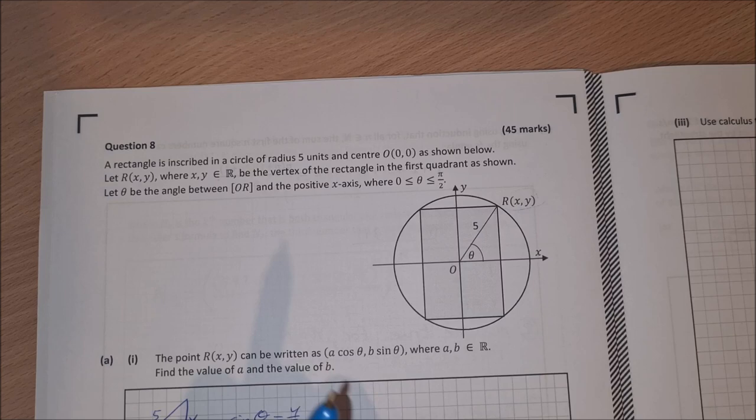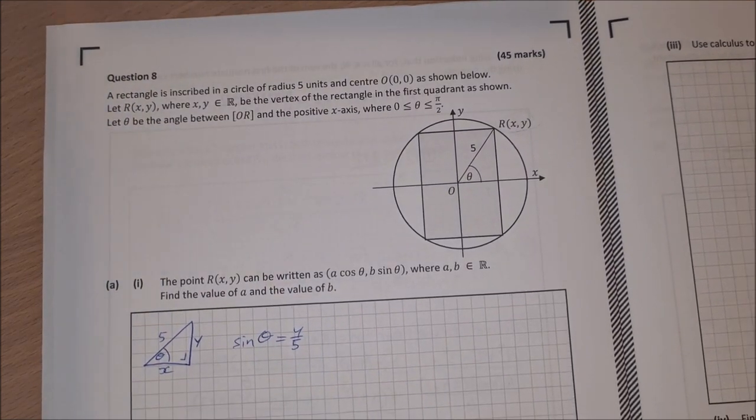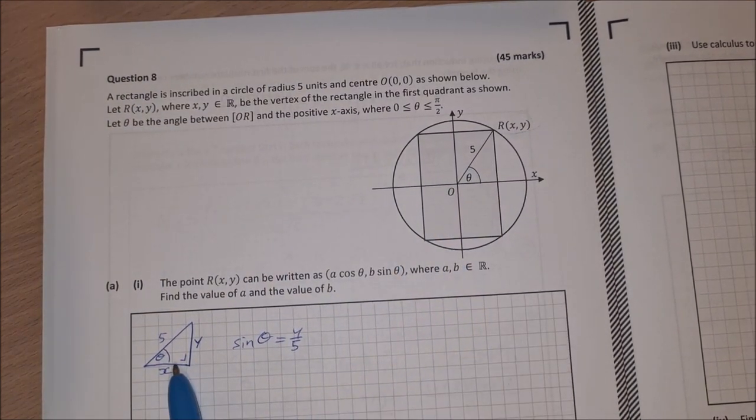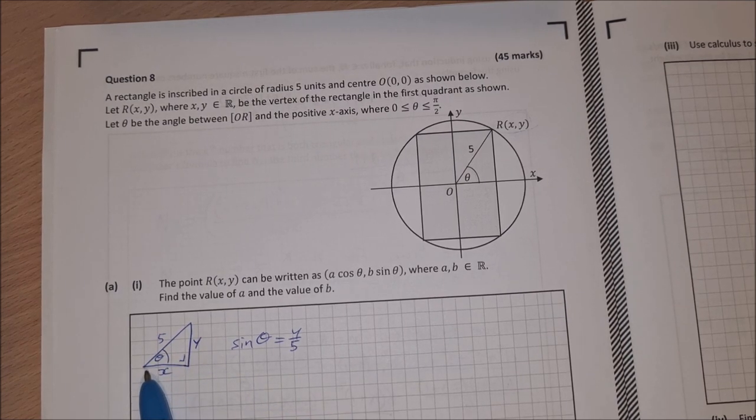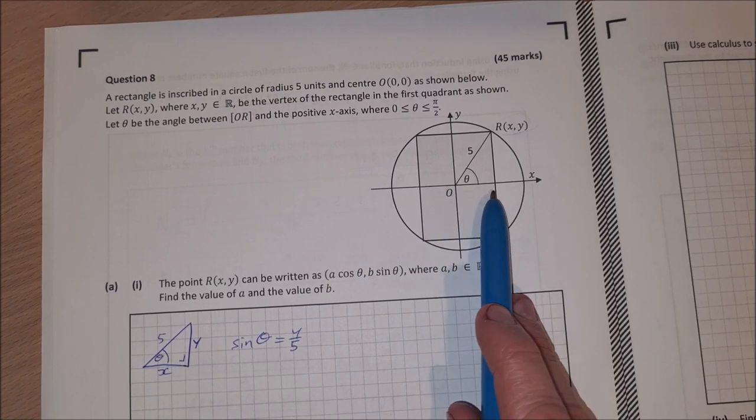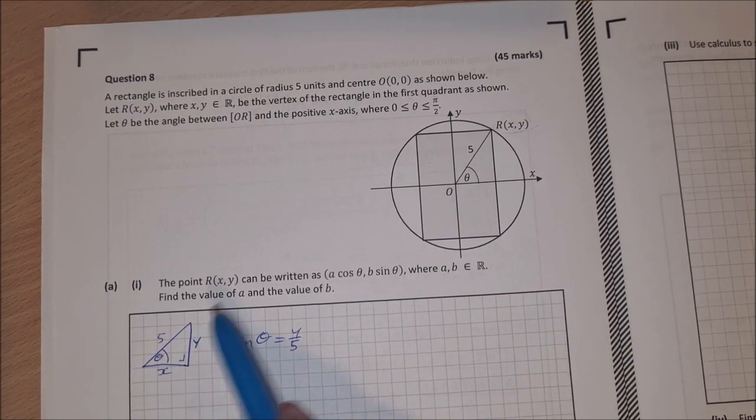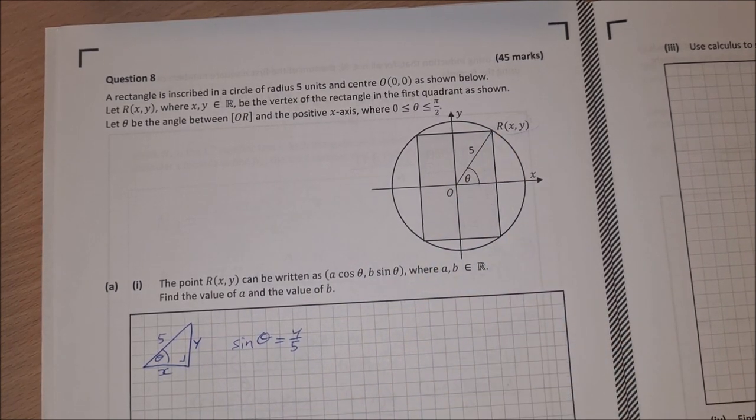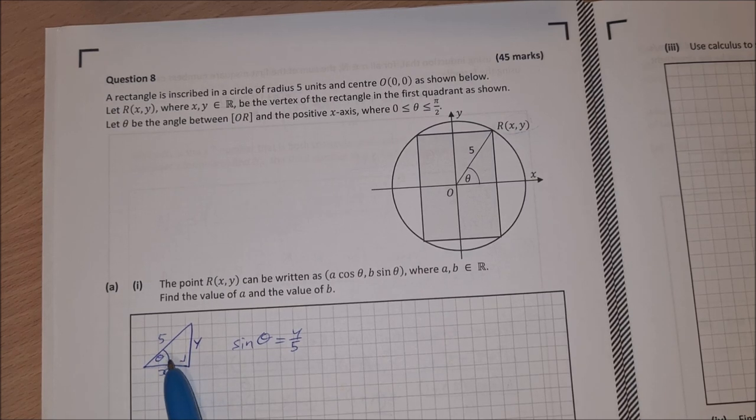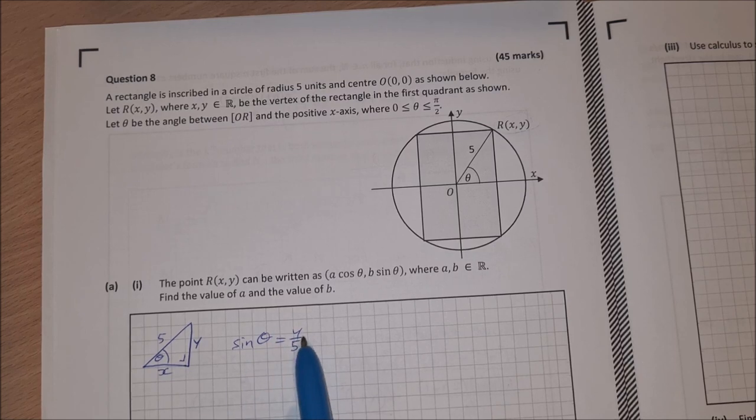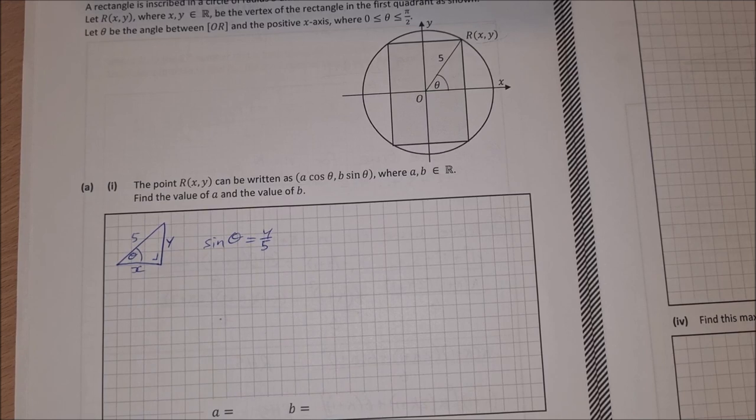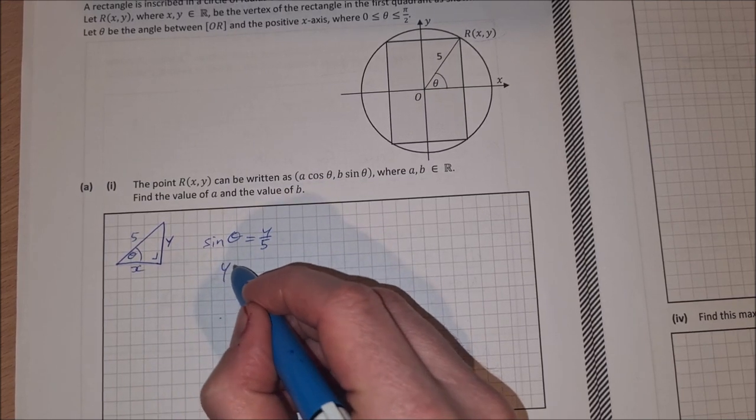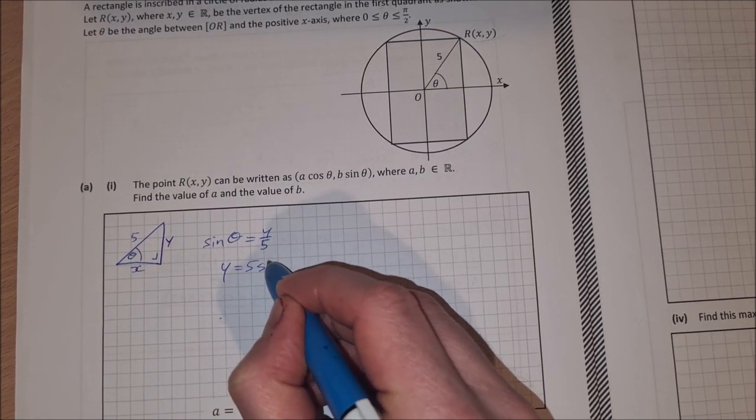So what I would start with is I would start with drawing this right angle triangle. So I've just done out the sketch of it here. And here we have our angle theta and our radius 5. This side is x because it's along the x-axis and this side is y because it's the length along the y-axis. So if I do the sine of this angle, sine of theta is equal to opposite over hypotenuse. Sine of theta is equal to y over 5. Now, if I want to isolate y, I'll multiply across by 5 and that'll be y is equal to 5 sine theta.